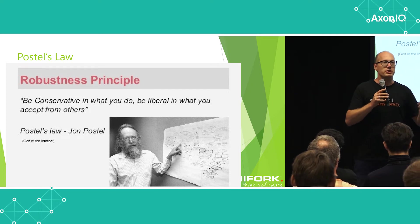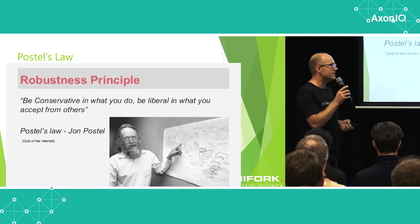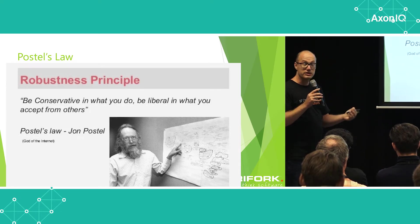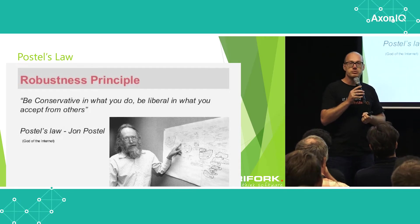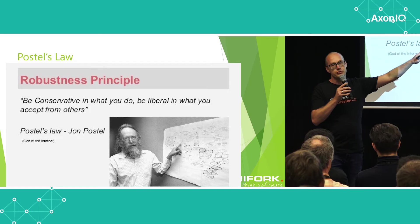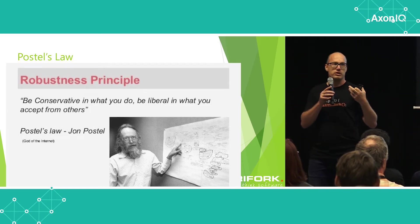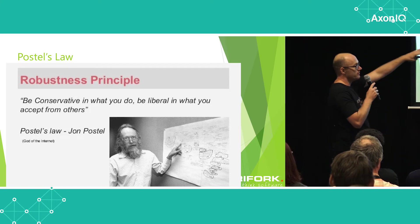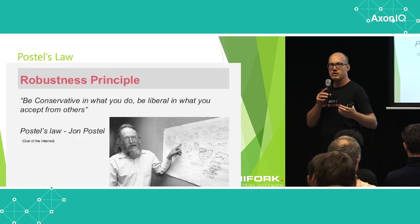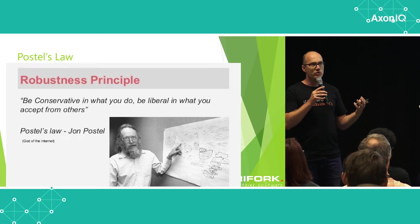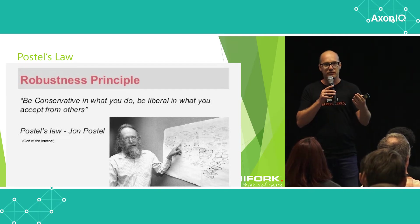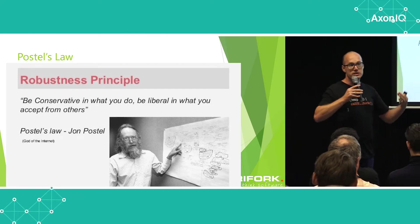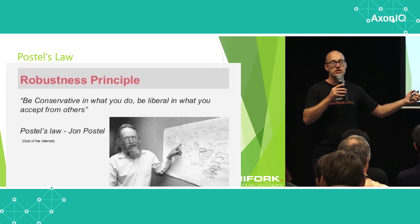Something everyone should be aware of is Postel's Law — the robustness principle from someone involved with the internet protocols that still make the internet tick today. He said you should be conservative in what you do: conservative in requests you send out or things you publish, making sure it's consistent and people know what to expect. But on the other hand, you should be liberal in what you accept from others. Don't be too strict in validating against schemas. If you find additional information you don't know what to do with, you probably don't care about it that much. Being liberal in what you accept makes it easier to evolve systems without continuously breaking compatibility.